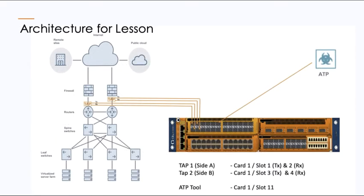For this lesson, we're going to take a look at this architecture. Looking at the diagram on the left, you'll see that I have two north-south ingress points with taps that have both transmit and receive feeds going into our HC2 appliance. For TAP1 side A, I have them going into card 1, slot 1 (transmit) and slot 2 (receive). For side B, I have card 1, slots 3 and 4. I also have an advanced threat tool plugged into card 1, slot 11.